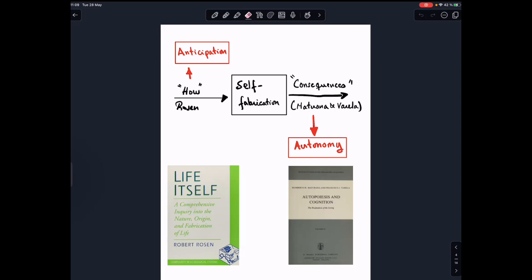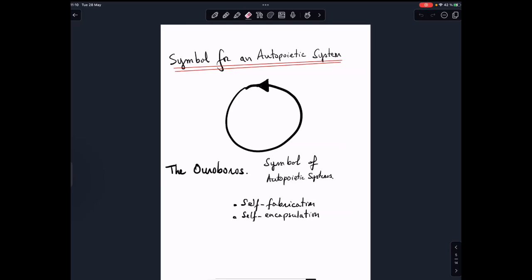And they wrote initially in Spanish, but that book, Autopoiesis and Cognition, was published in 1980, and from then on, it has been a veritable explosion of different works exploring the notion of autopoiesis with different degrees of quality. And I'm going to use a lot of diagrams in this presentation. This is the symbol of an autopoietic system, is the Ouroboros, the snake that eats itself. And remember that the important thing is self-fabrication and self-encapsulation.